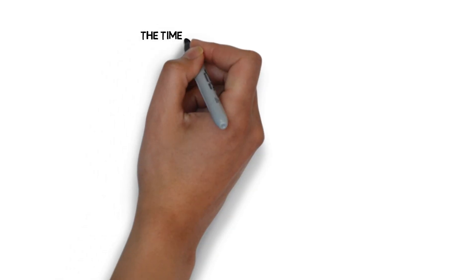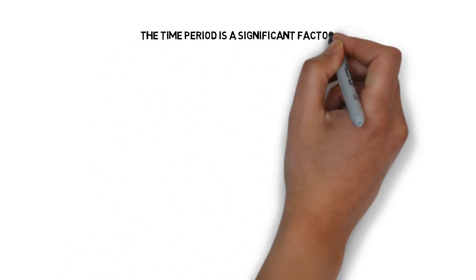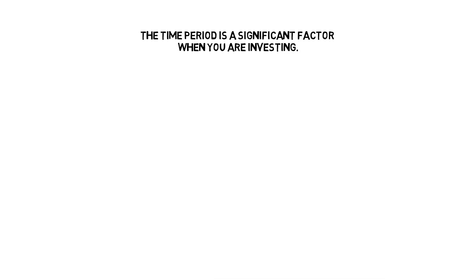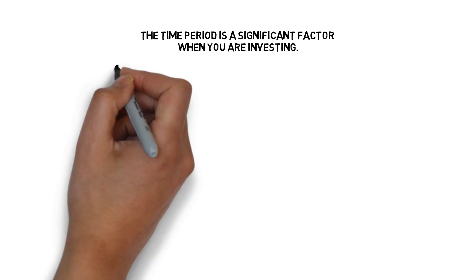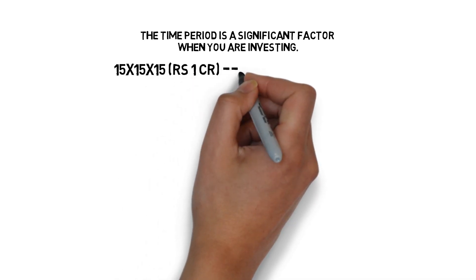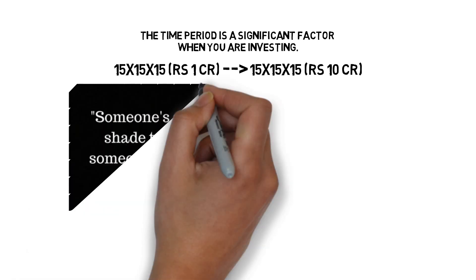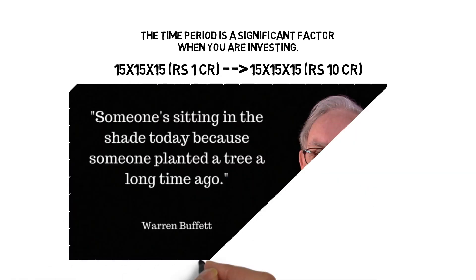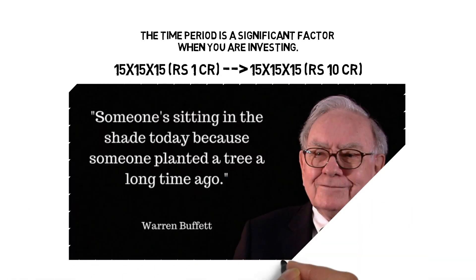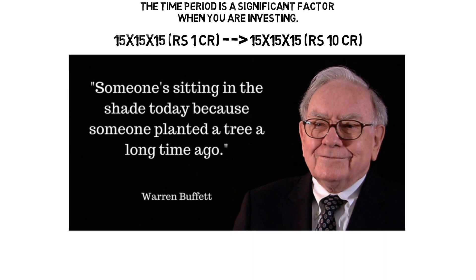So let's quickly conclude this video. The time period is a significant factor when you are investing. As shown in this video, by doubling your time horizon from 15 years to 30 years, you can get a 10 times bigger final corpus. That's why it is recommended to start investing as soon as possible. To end this video, here is an amazing quote by Mr. Buffett: "Someone is sitting in the shade today because someone planted a tree a long time ago."